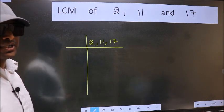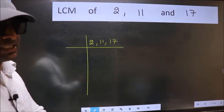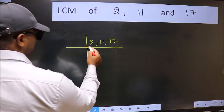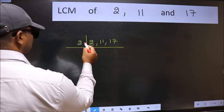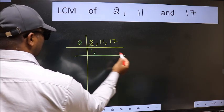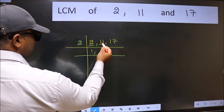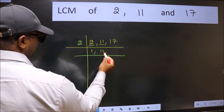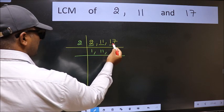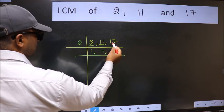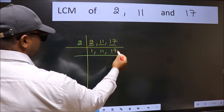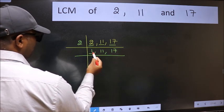Now we should focus on the first number which is 2 here. 2 is a prime number, so 2 wants 2. The other number 11 not divisible by 2, so we write it down as it is. The other number 17 not divisible by 2, so we write it down as it is. Now we got 1 here.